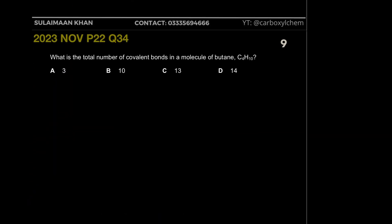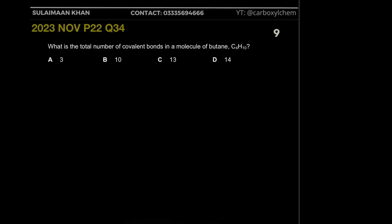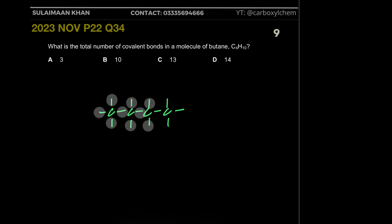Now, what is the total number of covalent bonds in a molecule of butane? Simply draw the full structural formula of butane with all hydrogens — it's a saturated hydrocarbon. Count all the bonds: one, two, three, four, five, six, seven, eight, nine, ten, eleven, twelve, thirteen. The answer is 13.